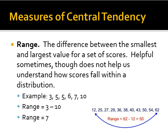The range is the difference between the smallest and largest value for a set of scores. This is helpful sometimes, though it does not help us understand how scores fall within a distribution. Going back to our example of 3, 5, 5, 6, 7, and 10, the range is from 3 to 10. Subtracting 3 from 10 gives us 7 — that's our range.